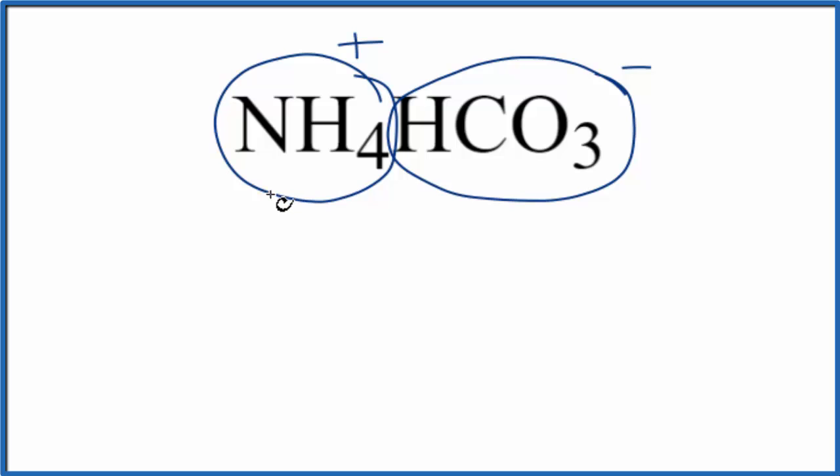So when we draw the Lewis structure, we need to draw the Lewis structure for the ammonium ion and then the bicarbonate ion.